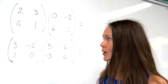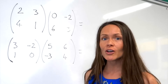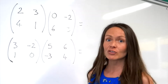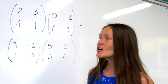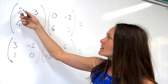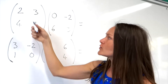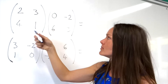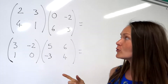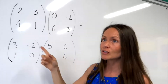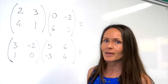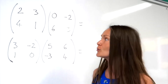Hi there. In this video, I'm going to be showing you how to multiply 2 by 2 matrices together. They're called 2 by 2 matrices because there are 2 rows and 2 columns. When we're multiplying 2 by 2 matrices together, our answer will also be a 2 by 2 matrix.